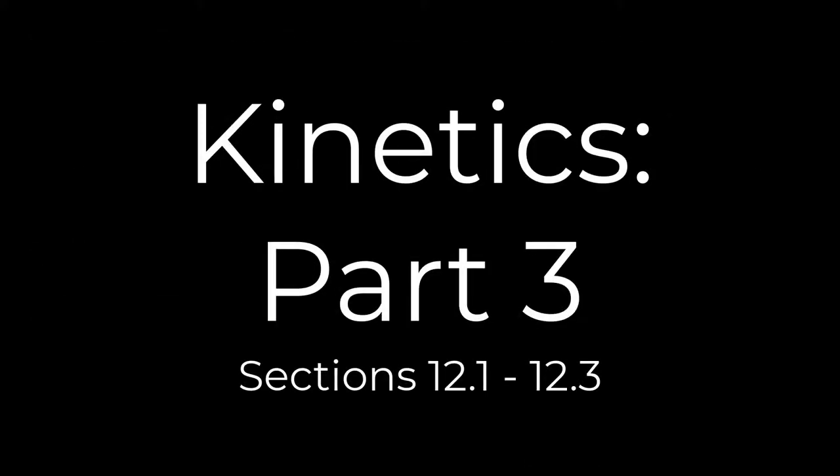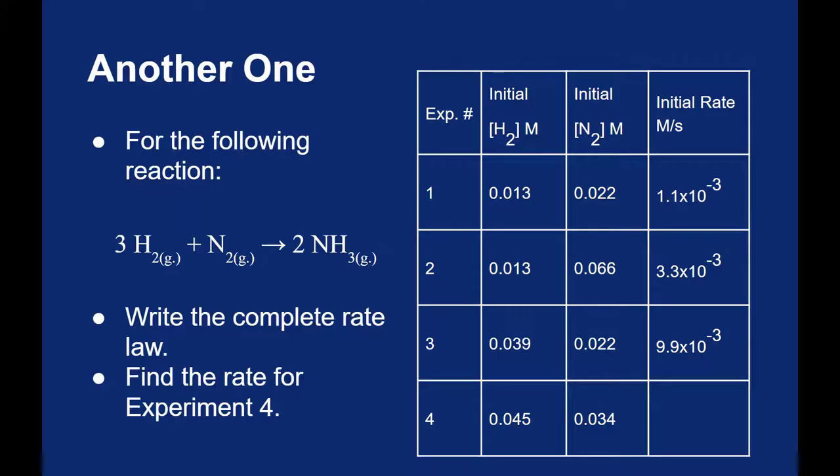There's a lot going on in these rate law problems, so let's try another one. Let's generate ammonia from hydrogen and nitrogen. Given this data table, we should be able to write the complete rate law with the exponents, the rate constant, and the proper units, and then find the rate for experiment number 4.